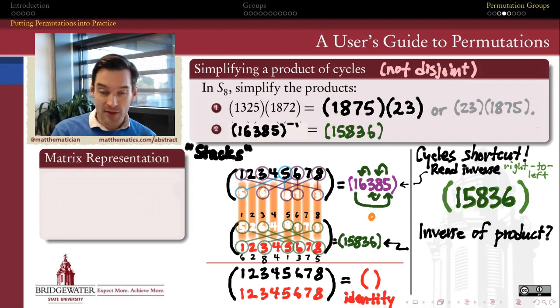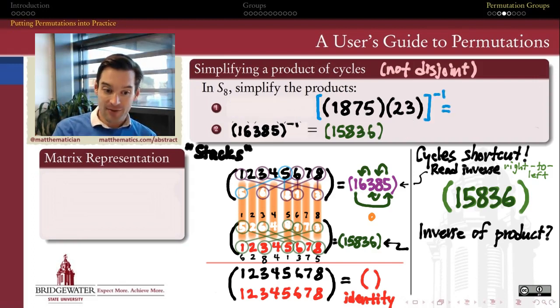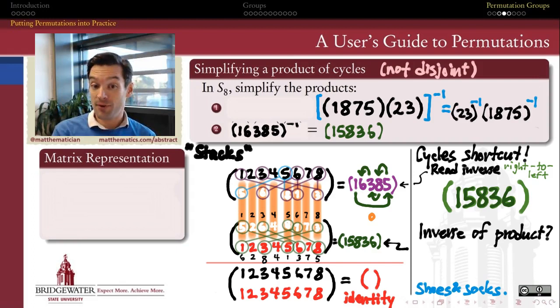So that tells me how to take the inverse of an individual cycle. So how then do we take the inverse of any permutation? Well, if we're convinced that every permutation can be written as a product of cycles, then we have, to find the inverse of a product, this theorem that works in absolutely any group, the shoes and socks theorem. The inverse of a product is the product of the inverses just taken in the opposite order.